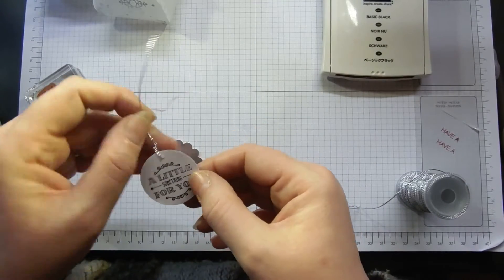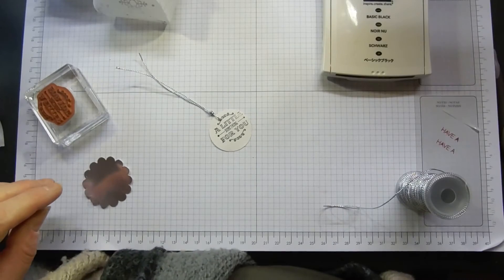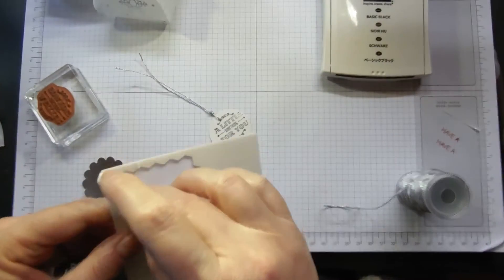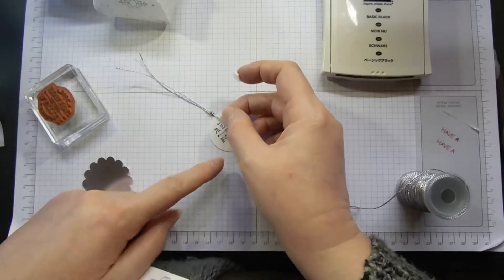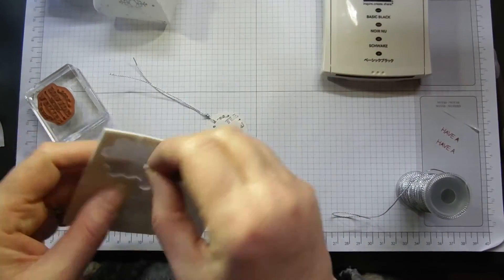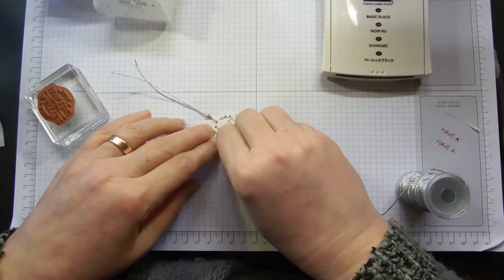Pop some Stamping Dimensionals on the good side. See how you can camouflage the fact that the stamping didn't come out quite right? You just want three little Stamping Dimensionals. Remove the topping.